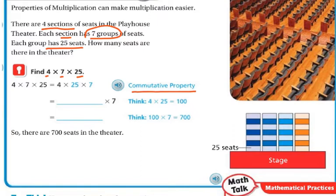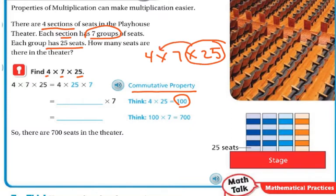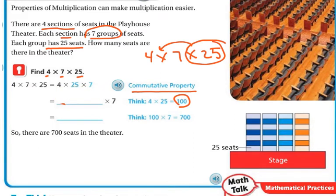I can use the commutative property. So think about it — 4 times 25 equals 100, that's an easy one. So instead of writing 4 times 7 times 25, I'm going to move this over and do 4 times 25 times 7. I can do that as 100 in mental math. So if I know this is 100, I can easily do 100 times 7. 7 times 1 is 7, and I add my two zeros — so there are 700 seats in the theater.